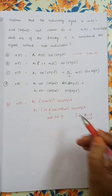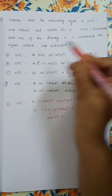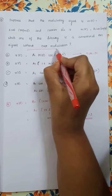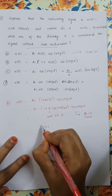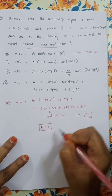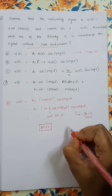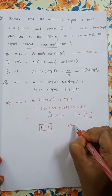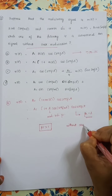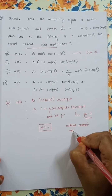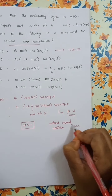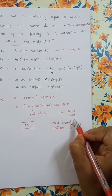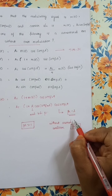The question asks for a conventional AM signal without over-modulation. Over-modulation occurs when mu is greater than 1. Without over-modulation, the condition should be mu less than 1. Since option B gives mu = 2, this represents over-modulation and is not correct.